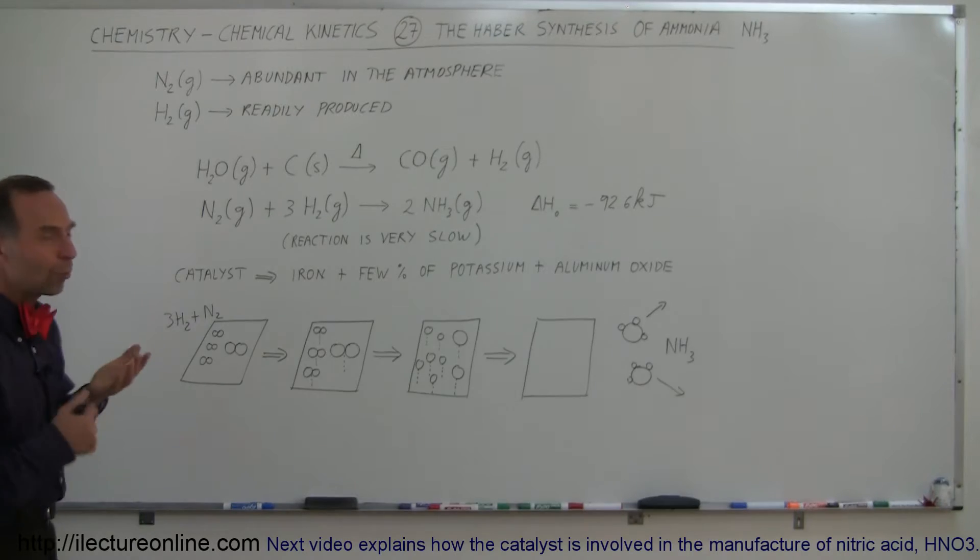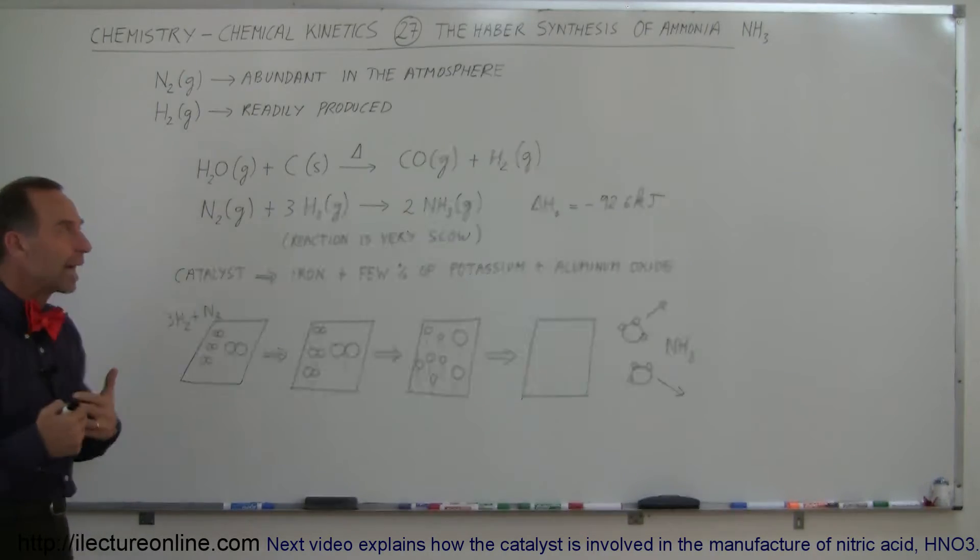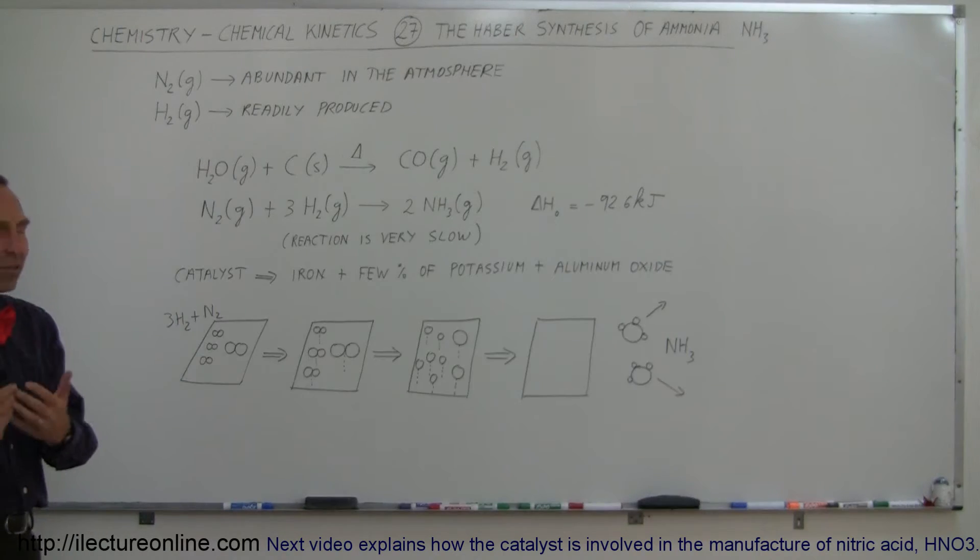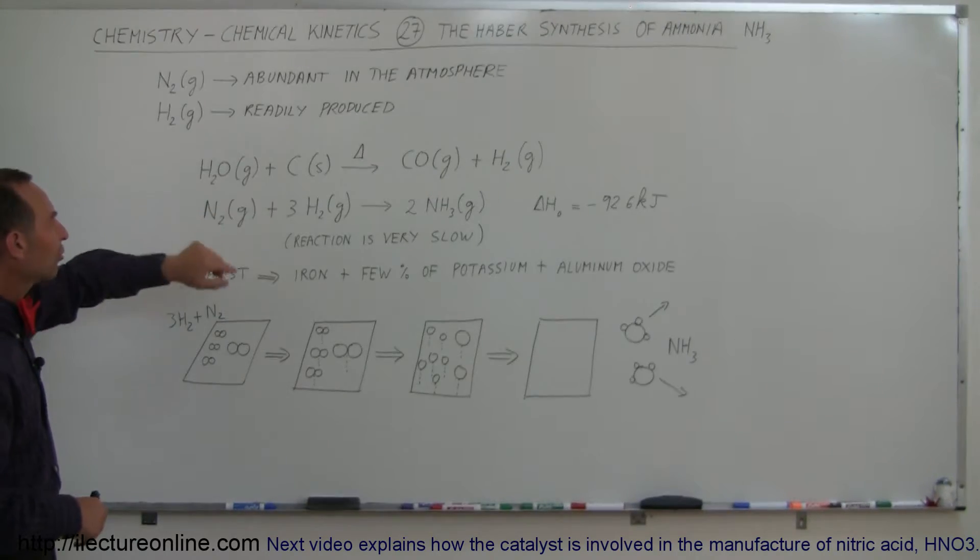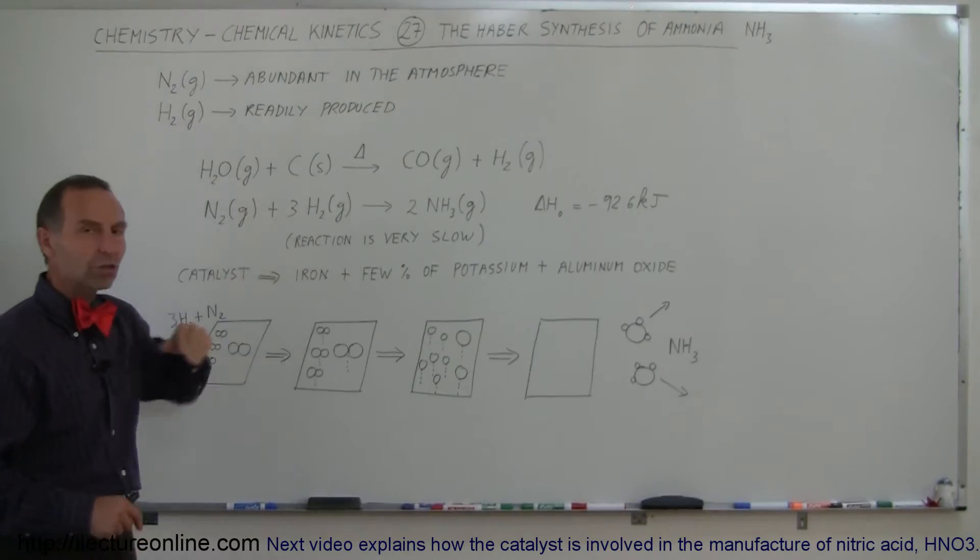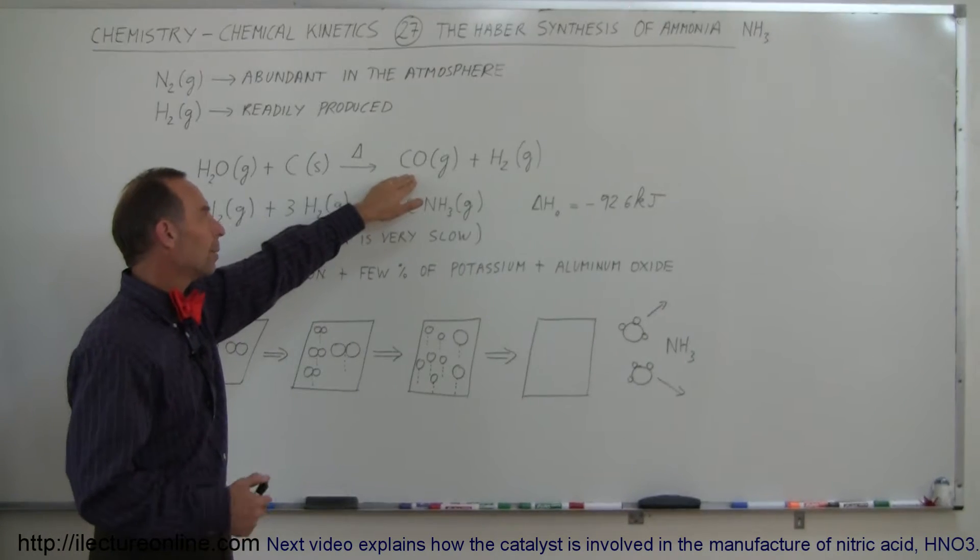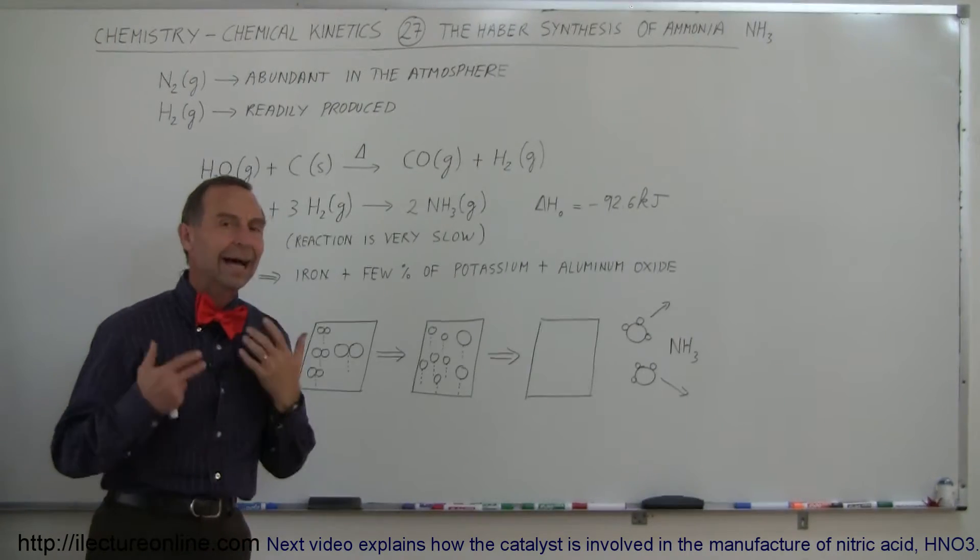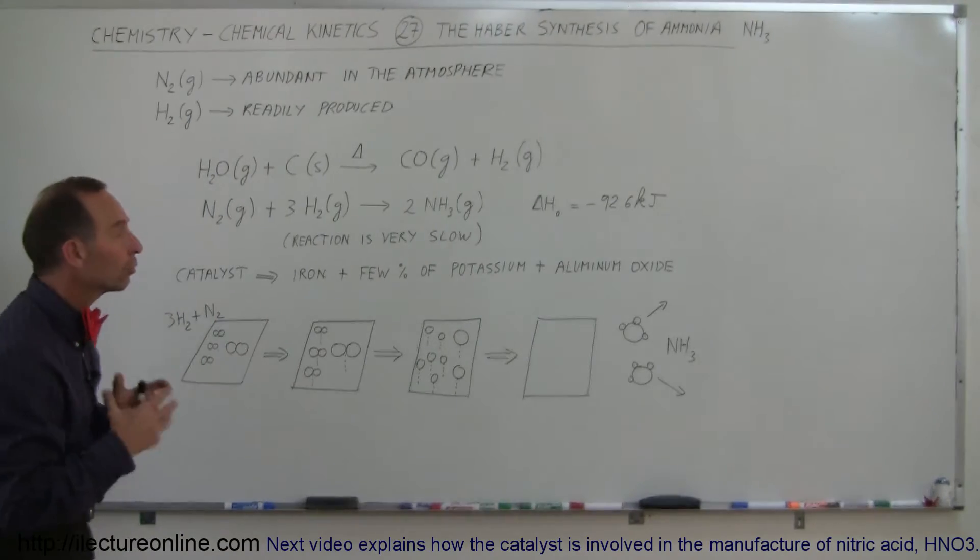Hydrogen gas is also readily produced. It's not as easy to get because you have to do a chemical reaction and you need heat in order for the reaction to take place. So we take water, heat it up into a gas form, mix it with solid carbon, a lot of heat, and we produce carbon oxide gas and hydrogen gas. Now we have nitrogen and hydrogen gas that we can mix together to form ammonia.